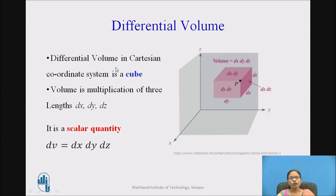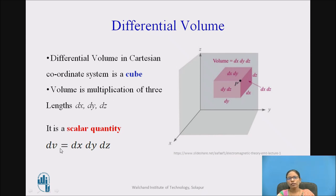Differential volume. The differential volume in Cartesian coordinate system is a cube, and volume is the product of three lengths — dx, dy, and dz. So dv = dx dy dz. It is a scalar quantity, so there is no direction or unit vector involved.